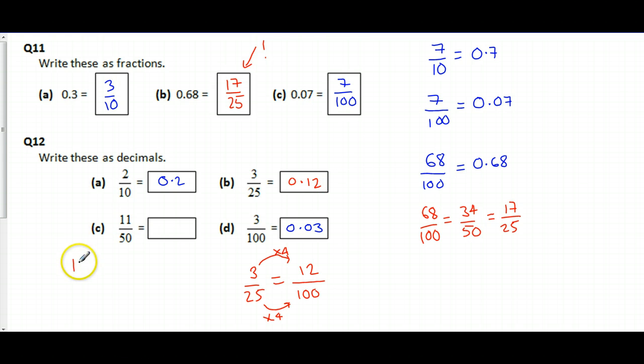Same thing over here. 11 over 50. If I could get the bottom to 100, I could convert it to a decimal easy like this one. Yeah, out of 10. And this one out of 100, convert it to decimals really easily. So what have I done? Ah, I've doubled here. So I must double here as well. Gives me 22. 22 over 100, 0.22.